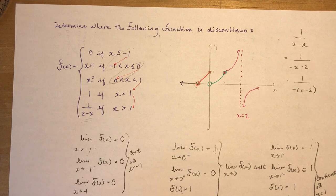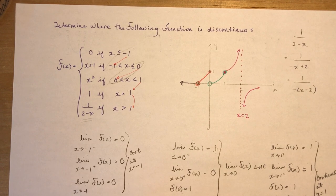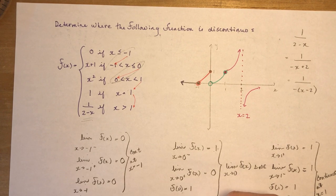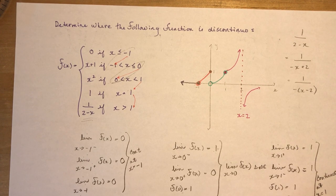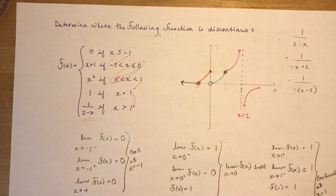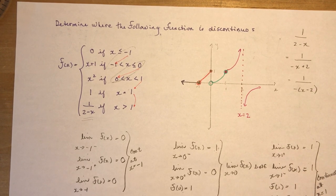To conclude: the function is discontinuous at x equals 0 — that's a jump discontinuity — and at x equals 2, which is an infinite discontinuity. Remember to check all join points (like negative 1, 0, and 1) and also watch out for vertical asymptotes. Don't forget to subscribe!